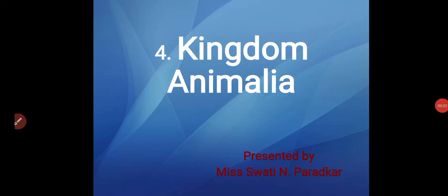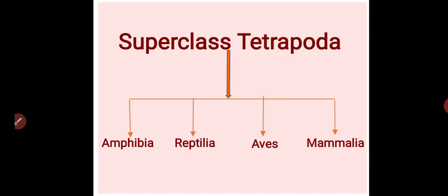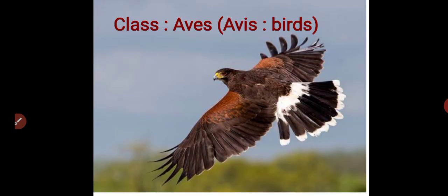Hello students, you are learning topic number four, which is Kingdom Animalia. In this topic you already learned about the non-chordate phylums, after that the classification of phylum Chordata. Now you are learning the superclass Tetrapoda, which is classified into class Amphibia, class Reptilia, Aves, and class Mammalia. In today's lecture you will learn in detail about class Aves. The word Aves means birds, so in this class all birds are included.